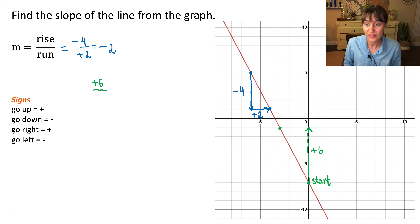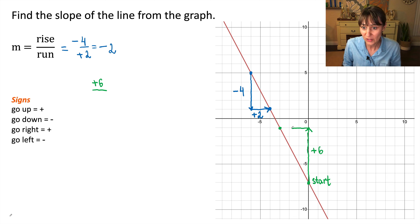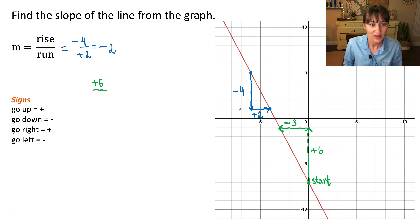Now let's go to the left. Let's count squares: one, two, three. We went to the left, so we will use a negative sign — negative three.